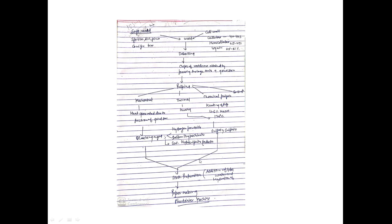After pulping, the next step is stock preparation, which is a hydration process. Excess water is added to hydrate the cellulose fibers, and then the stock is passed to the paper-making machine. The most widely used machine is the Fourdrinier machine — spelled F-O-U-R-D-R-I-N-I-E-R. The machine was named after two brothers who financed the project.